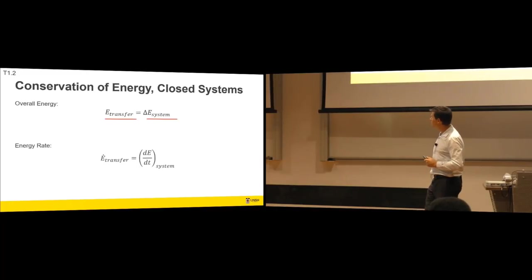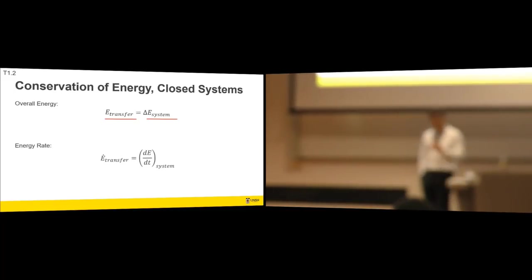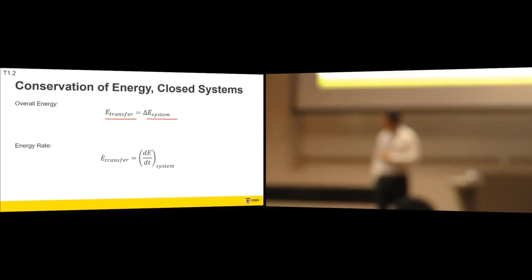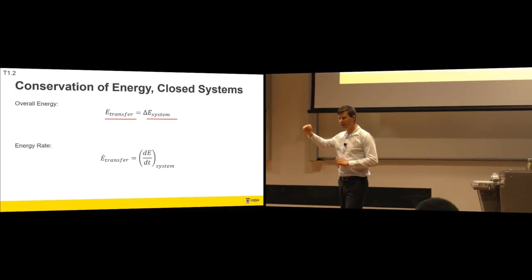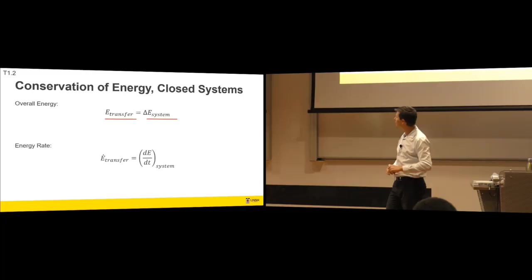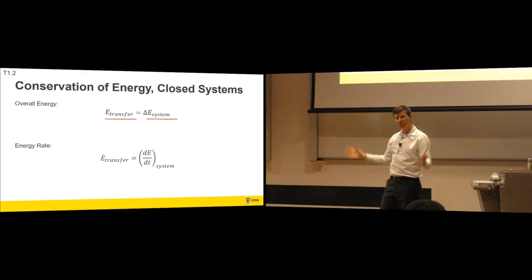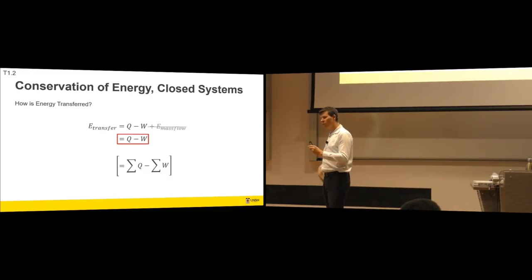What about our conservation of energy? Overall energy transfer. So the energy transfer into and out of a system must equal the change of energy in the system. If energy's coming into the system and nothing's going out, the energy must increase and vice versa. We can do that on a rate basis as well. I want to treat the left-hand side and the right-hand side of the equation separately. We'll simplify them, bring them together, and we'll have a first law for closed systems.